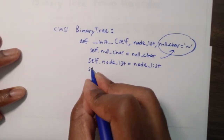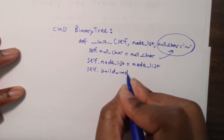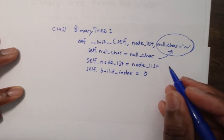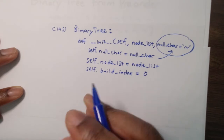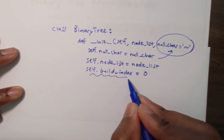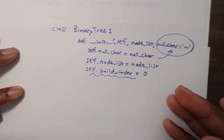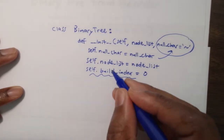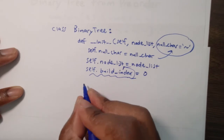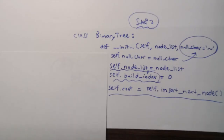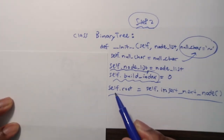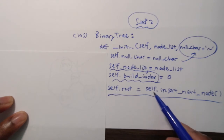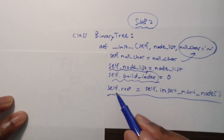The build index is very important because it allows us to maintain a global index of where we are within the node list during recursion. We also define the root node here using a method called insertNextNode, which we'll define in step three. The build index gives us the capability to refer to the current node value no matter where we are in the recursion.